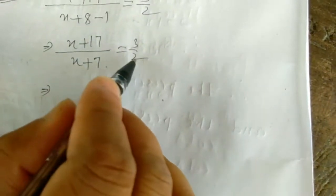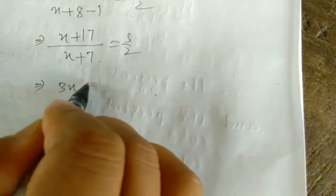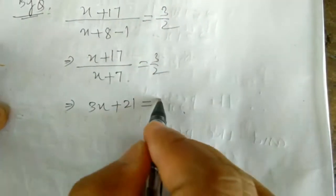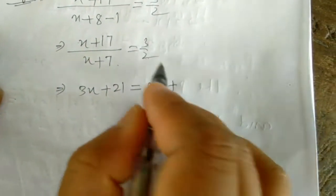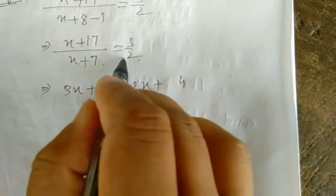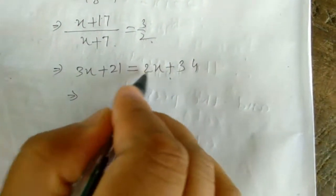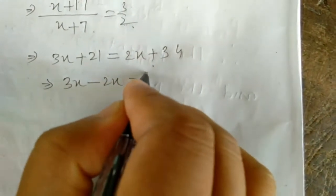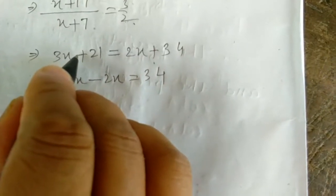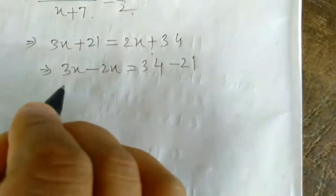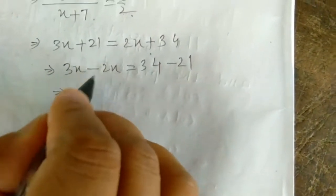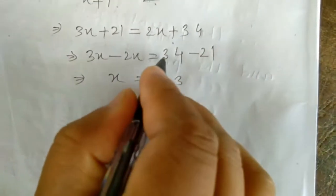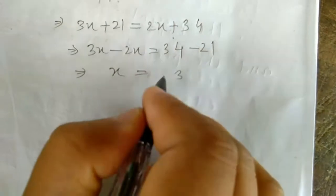Cross multiply: 3(x + 7) = 2(x + 17), giving 3x + 21 = 2x + 34. Bring x to the left and constants to the right: 3x − 2x = 34 − 21, so x = 13.